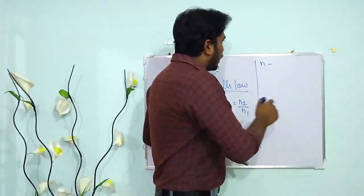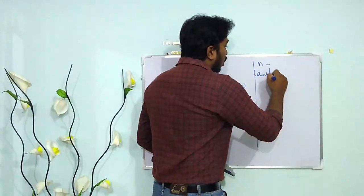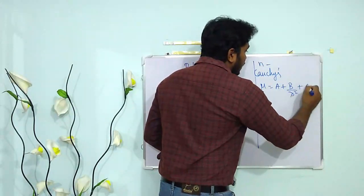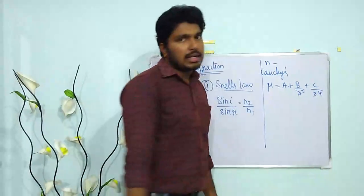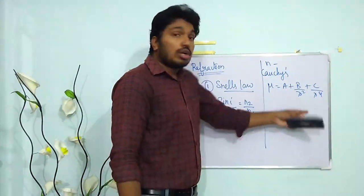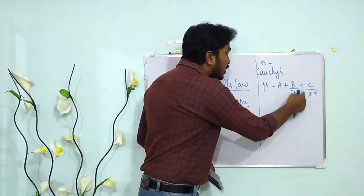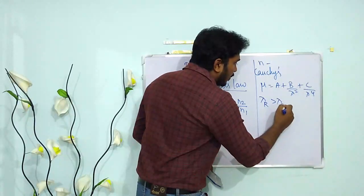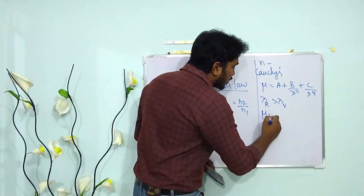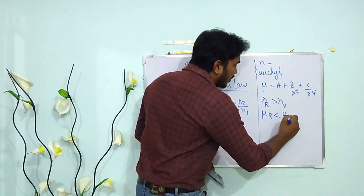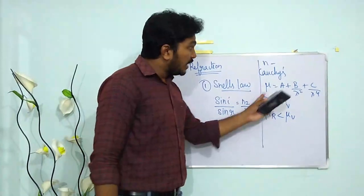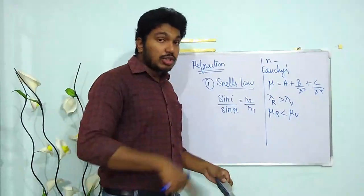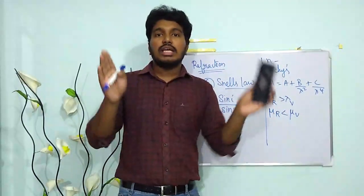Based on Cauchy's formula, we can write μ = A + B/λ² + C/λ⁴, and so on. From this we can say that refractive index also depends on wavelength. Since λ_red > λ_violet, the refractive index for red is less than for violet. So refractive index depends on temperature, the medium, and the color or wavelength.